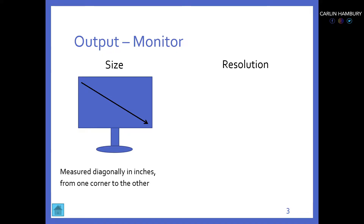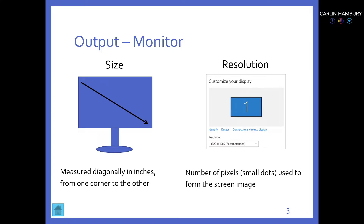When you go and buy a TV or monitor, one of the things you look for is the size, and the other is your resolution, which relates to quality. There are pixels that make up the image on your monitor — little dots that represent each color you can have on your screen. The more pixels you have, the clearer the image is going to be. For example, 1920 by 1080 tells you the number of pixels from left to right and top to bottom per square inch. The higher that number, the better the quality.